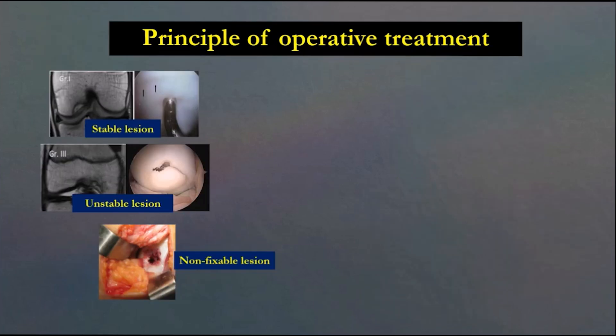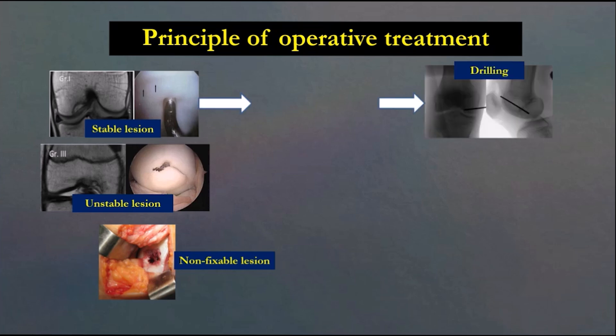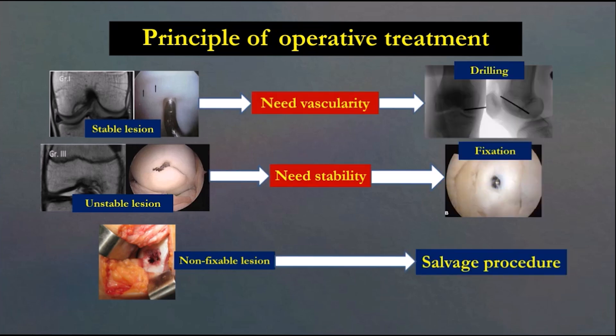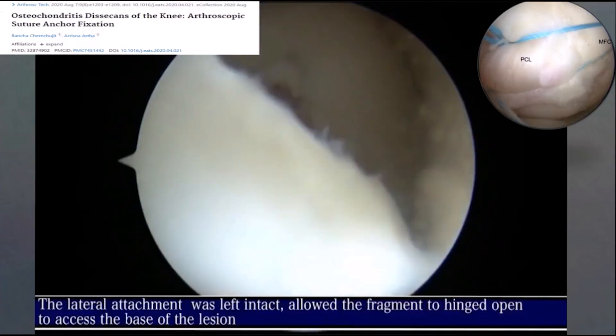The principle of treatment depends on the stability of the lesion. If the lesion is stable, you need to make good vascularity, like antegrade or retrograde drilling. If it's not stable, you need to make it stable by fixation — you can use a metal screw or bioabsorbable screw for the osteochondral lesion. If it's a non-fixable lesion, we end up with a salvage procedure.